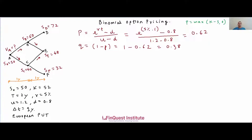Applying the put payoff at the terminal nodes: PD = max(52 − 72, 0) = 0, since the stock price of 72 exceeds the strike. PE = max(52 − 48, 0) = 4 units. PF = max(52 − 32, 0) = 20 units.